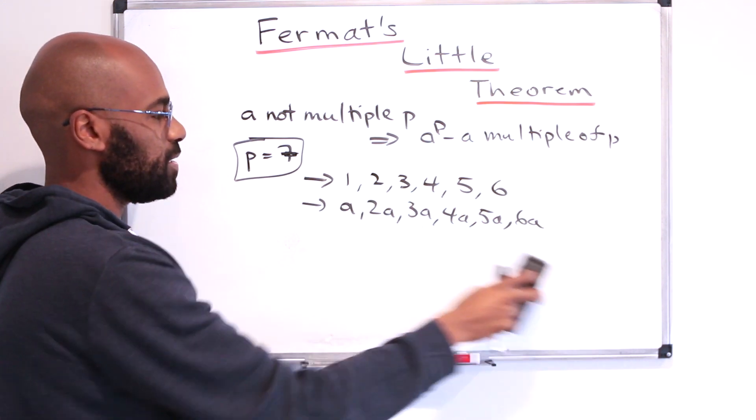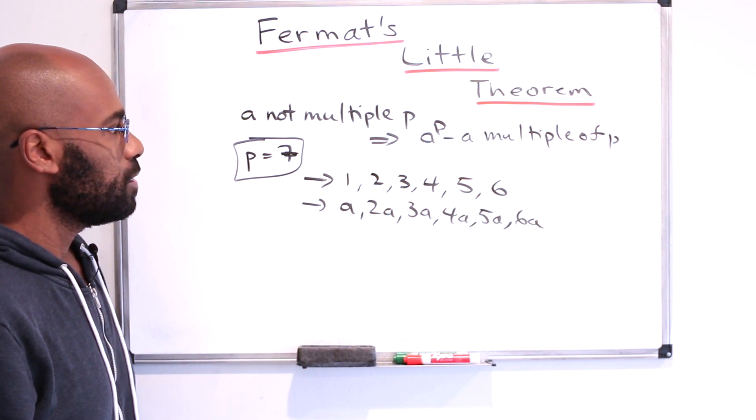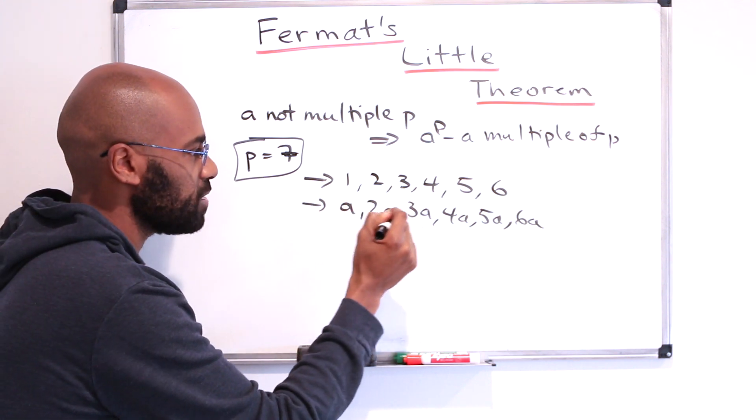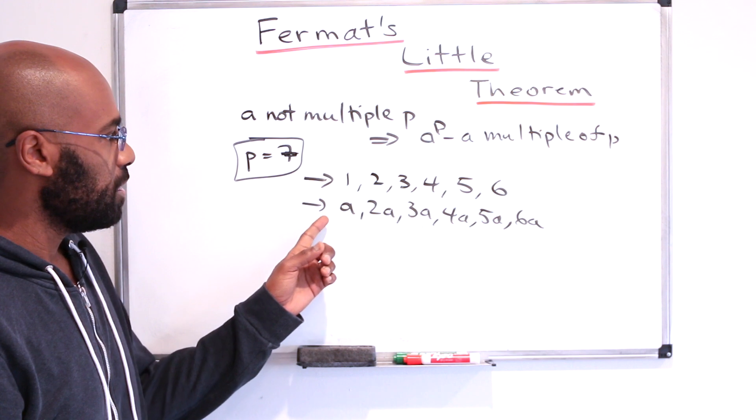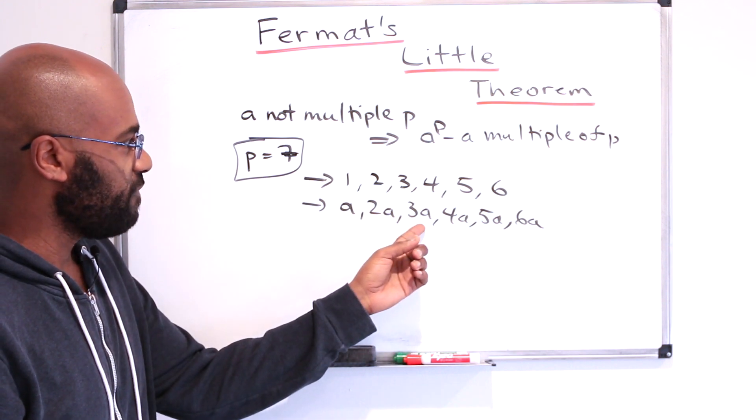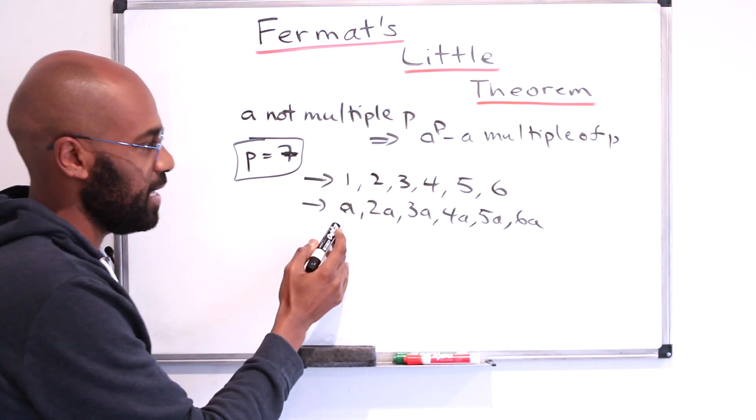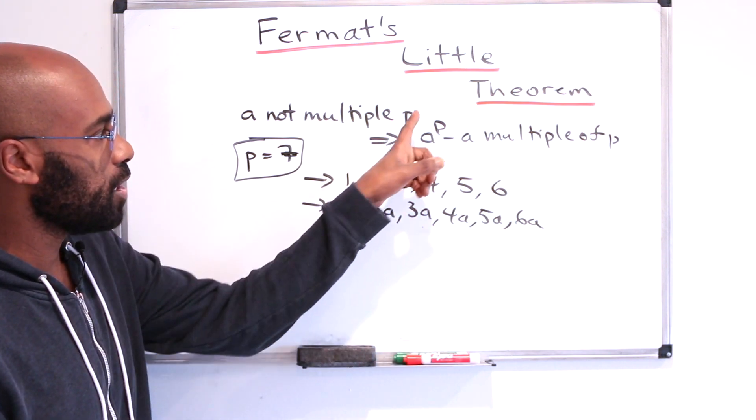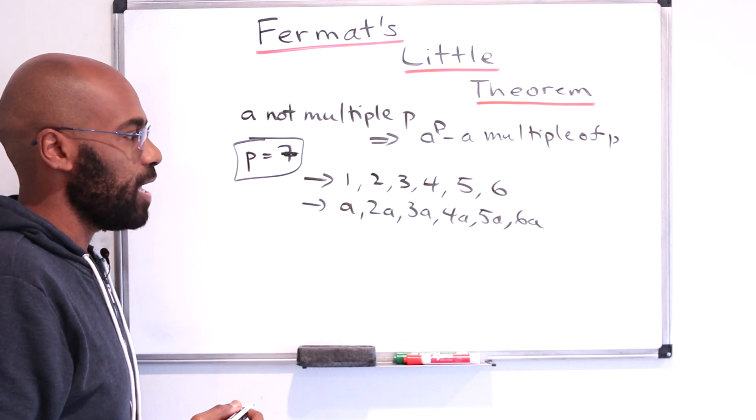So why is something like that helpful? Well, now if we think about the product of all of these numbers, that will give us a factor of A to the P minus 1. There's 6 copies of A in here. And so that's kind of close to this expression that we have right over here.